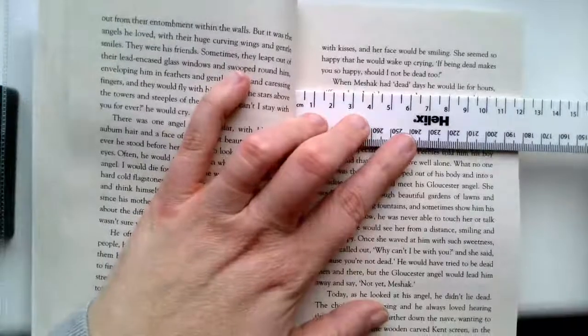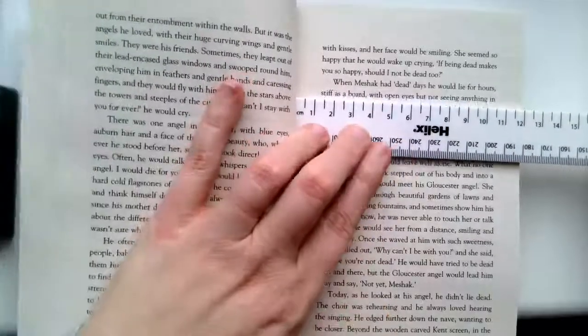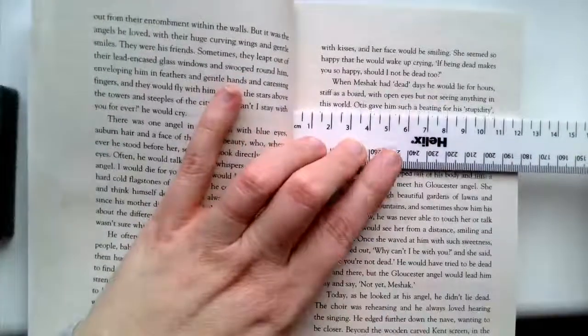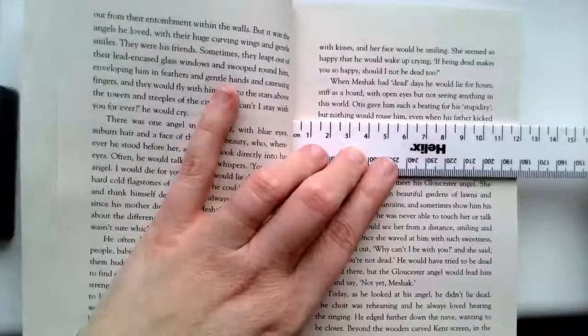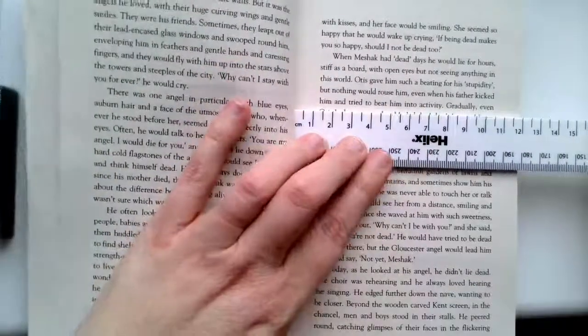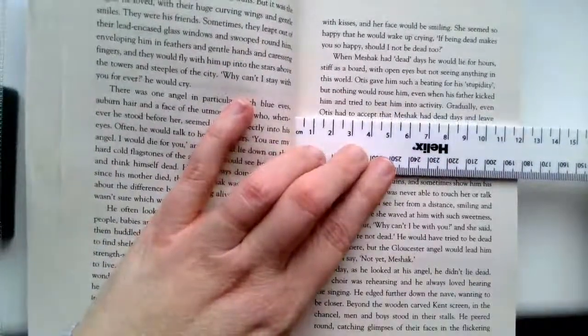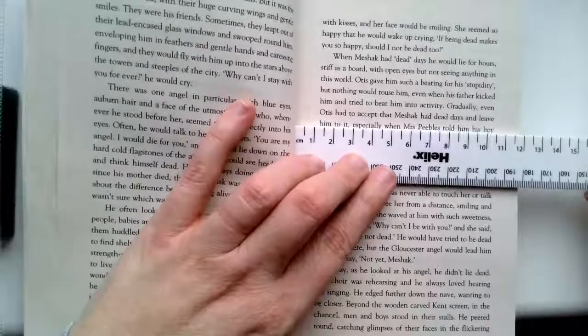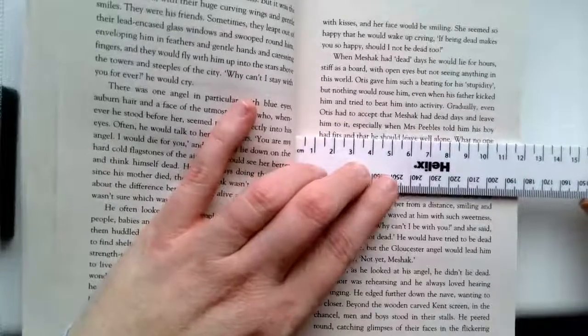When Meshach had dead days, he would lie for hours, stiff as a board, with open eyes, but not seeing anything in this world. Otis gave him such a beating for his stupidity, but nothing would rouse him, even when his father kicked him and tried to beat him into activity. Gradually, even Otis had to accept that Meshach had dead days and leave him to it.